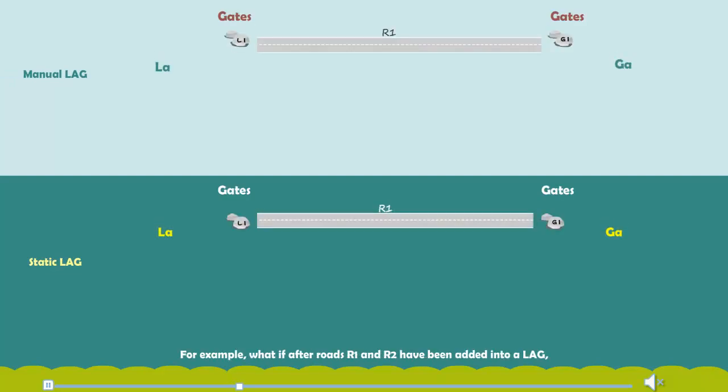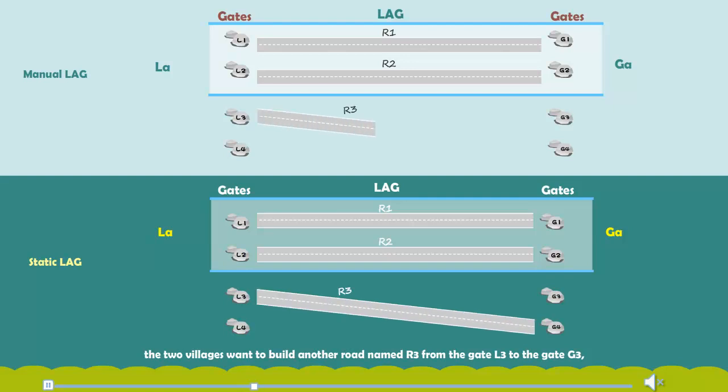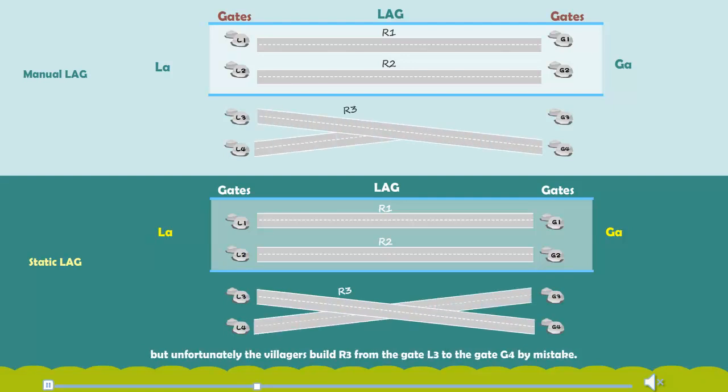For example, what if after roads R1 and R2 have been added into a LAG, the two villagers want to build another road named R3 from the gate L3 to the gate G3. But unfortunately, the villagers build R3 from the gate L3 to the gate G4 by mistake.